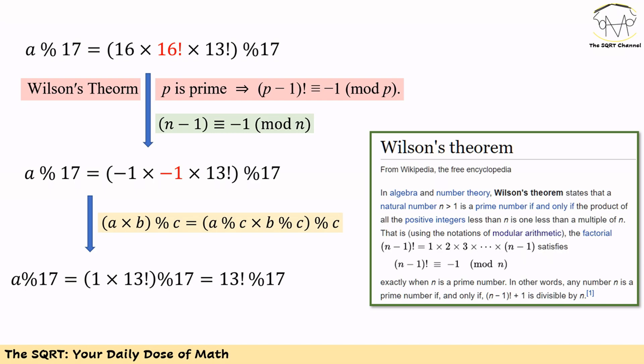We know 16 mod 17 is −1. We also know by Wilson's theorem that 16 factorial mod 17 is −1 as well, because 17 is a prime number and Wilson's theorem states that if p is prime, then (p−1)! mod p equals −1. So a mod 17 equals (−1) × (−1) × 13 factorial, mod 17.